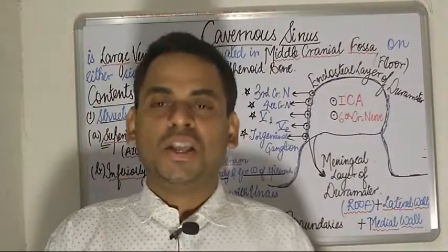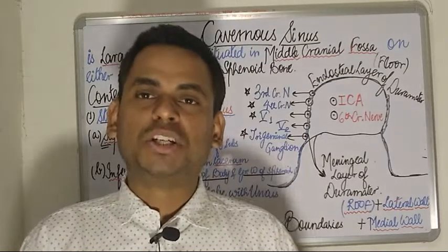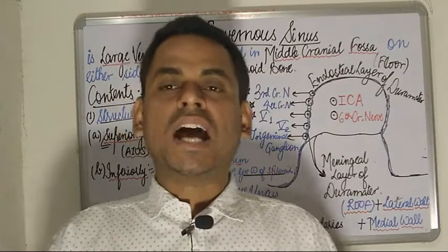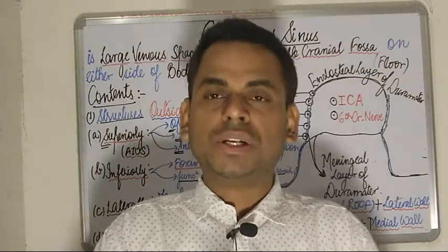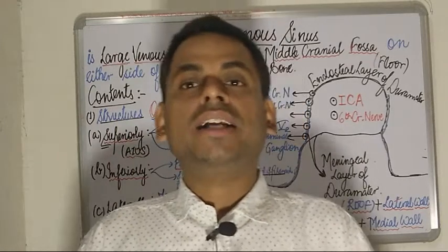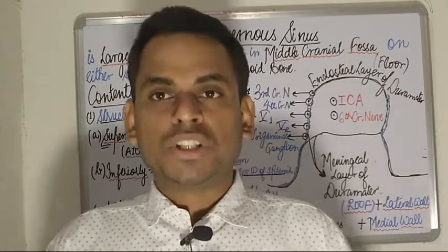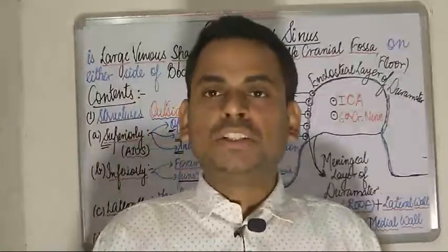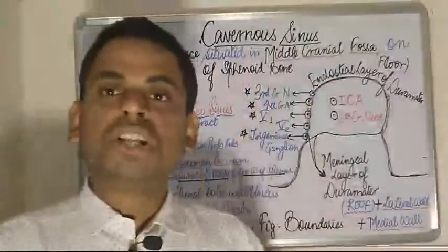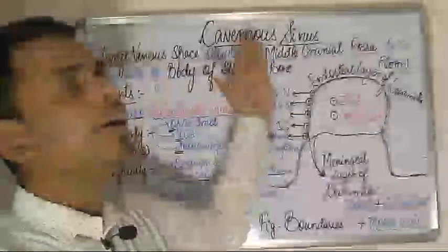Welcome to this session of the human anatomy series. Today the topic of discussion will be about the dural venous sinuses. There are dural venous sinuses present in the skull — some are paired and some are unpaired. Today we will focus on one of the paired dural venous sinuses, that is the cavernous sinus.